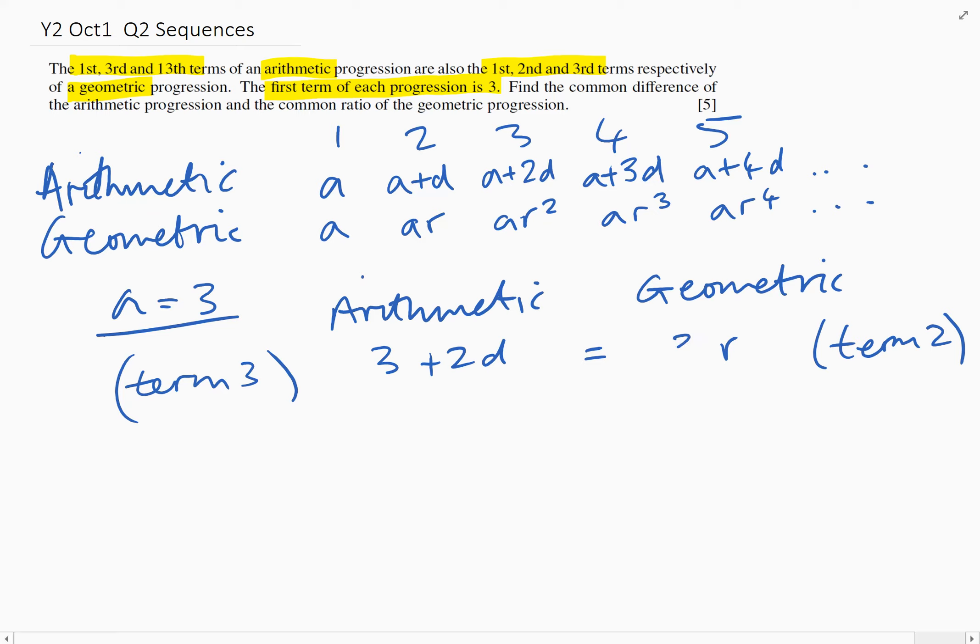And we also know that the thirteenth term, term 13 of the arithmetic, so that will be 3 plus 12d, will equal term three of the geometric. So term three of the geometric would be 3r squared.